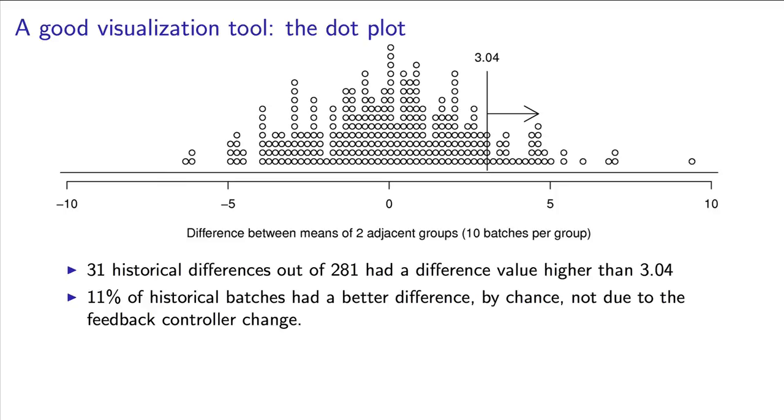We interpret this as an 11% risk we are making the wrong decision. There is an 11% chance, due to pure random luck, that system B had a 3% higher overall value than system A.